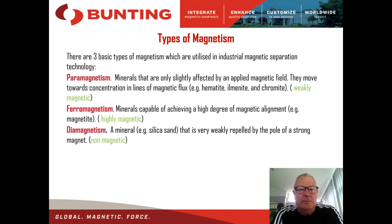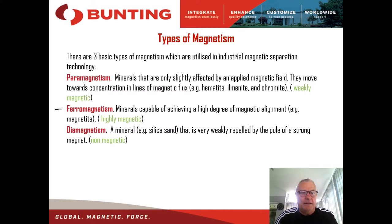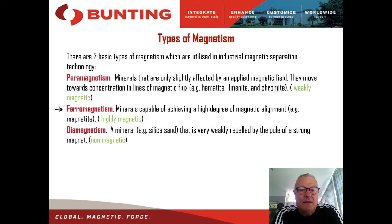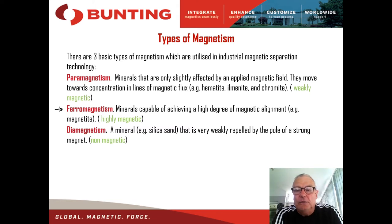We'll start with the basics about magnetic separation. At Buntings we see three types of magnetic properties in materials that we process. There are ferromagnetic materials, which are materials capable of a high degree of alignment — for example magnetite Fe3O4, which is a highly ferromagnetic mineral that often occurs in mineral deposits. Other examples would be grinding iron from milling circuits, ball mills and rod mills. Both are highly ferromagnetic and need to be removed at low field intensities, otherwise they can compromise the performance of higher magnetic susceptibility separators.